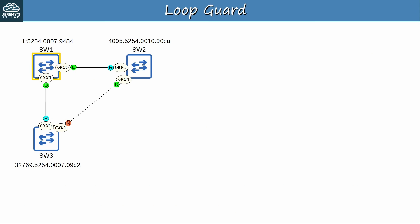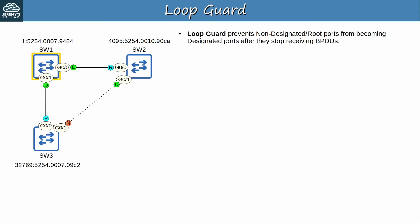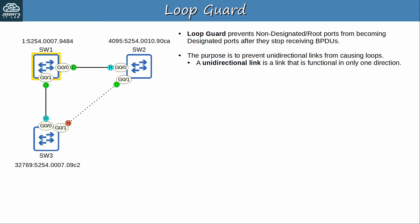Now let's move on to LoopGuard. LoopGuard prevents non-designated or root ports from becoming designated ports after they stop receiving BPDUs. However, its main use is on non-designated ports. The main purpose is to prevent unidirectional links from causing loops — a unidirectional link is a link that is functional in only one direction, likely due to a hardware failure.